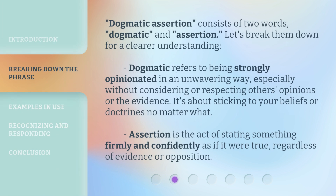Dogmatic assertion consists of two words: dogmatic and assertion. Let's break them down for a clearer understanding. Dogmatic refers to being strongly opinionated in an unwavering way, especially without considering or respecting others' opinions or the evidence. It's about sticking to your beliefs or doctrines no matter what. Assertion is the act of stating something firmly and confidently as if it were true, regardless of evidence or opposition.